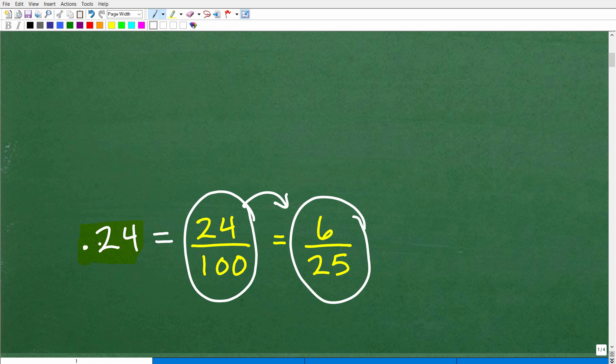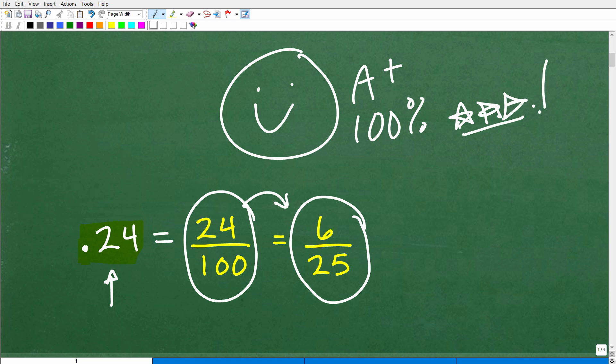Now, notice I'm calling this decimal 0.24, but some of you might have seen this and said, oh, this is 24 hundredths. If you were thinking 24 hundredths, or if you recognize this decimal as 24 hundredths versus 0.24, well, that's excellent because that's really the secret that's going to allow us to convert a decimal into a fraction.